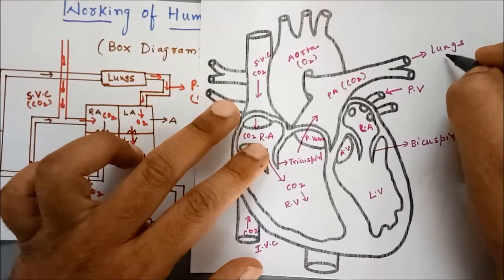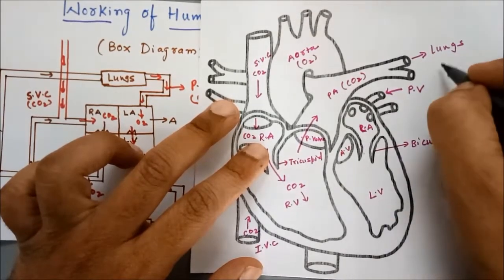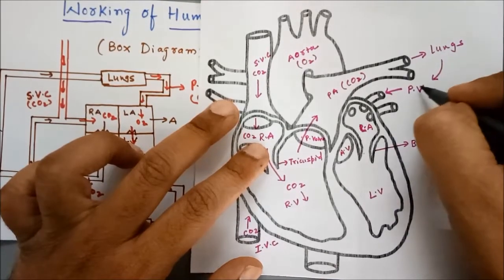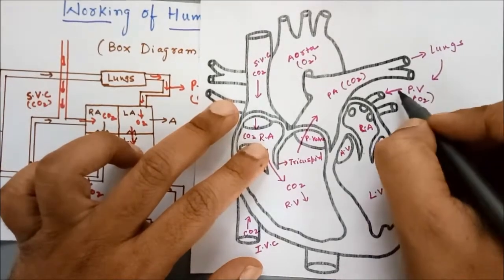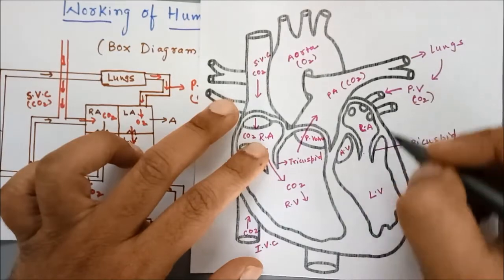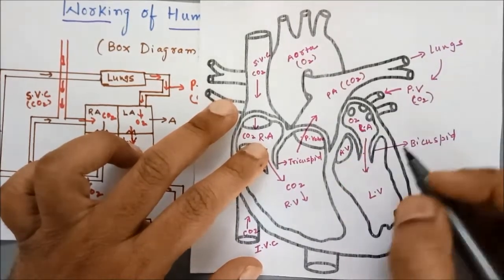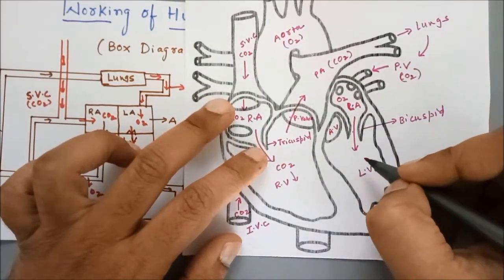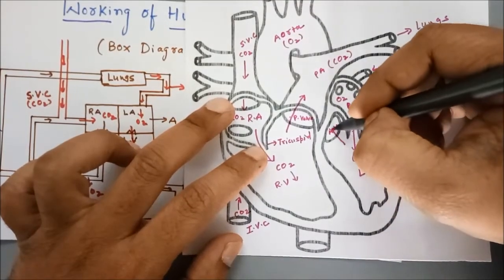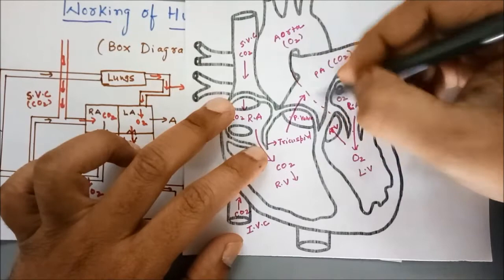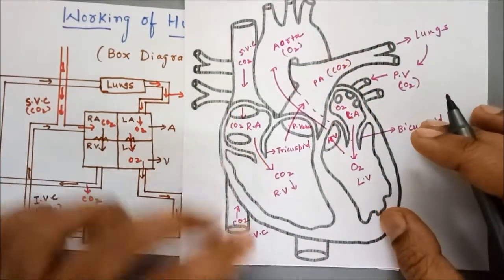From the lungs the purification of the blood takes place — carbon dioxide is removed and oxygen is added. So from the lungs the blood goes through the pulmonary vein, and that oxygenated blood goes into the left atrium. From the left atrium the oxygenated blood goes to the left ventricle, and from there it goes to the aorta, which is this, and then it is supplied to all the body parts.